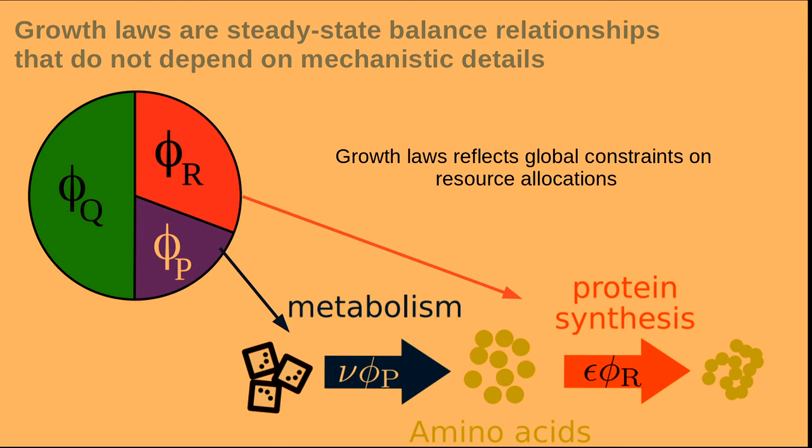Those relations arise because of the problem of resource allocation. Because a cell, in order to grow, needs to allocate some resources toward the ribosome, because they are the ones that synthesize new protein and allow the cell to build up the biomass. But in order to do that, the cell needs amino acids and other precursors in order to make the proteins. So, in order to grow, the cell does not only need the ribosome, but also needs to allocate some resources toward the metabolic proteins that take care of the consumption of nutrients and make the amino acids. The growth law arises also because of this trade-off between metabolism and protein synthesis.